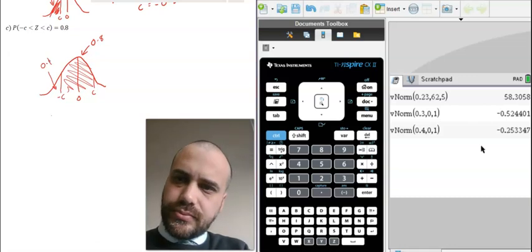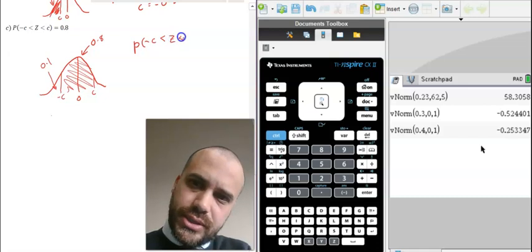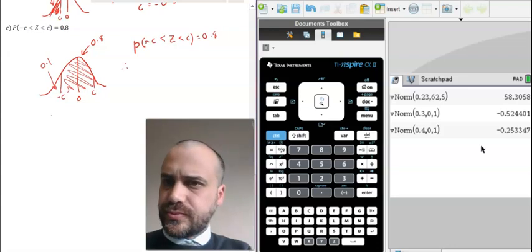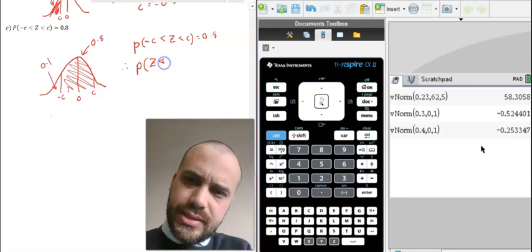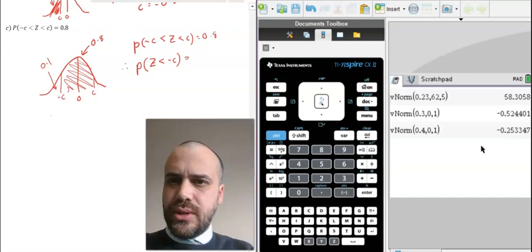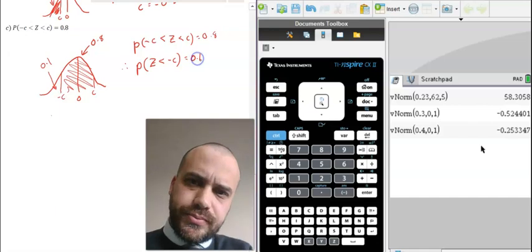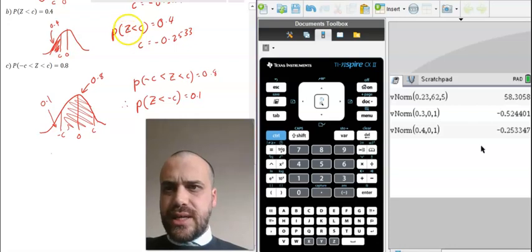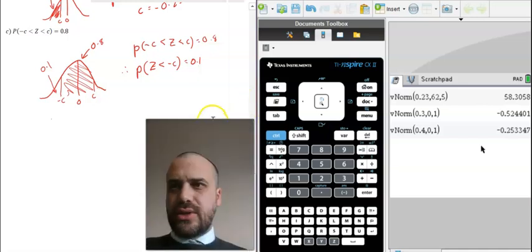Let's write this in here. P negative C is less than Z which is less than C equals 0.8 therefore P Z is less than negative C must be equal to 0.1. Whenever we're doing these questions we need to be able to convert them to a Z less than. You can see all three of these I've eventually converted to a Z less than because that's the only thing your calculator understands.